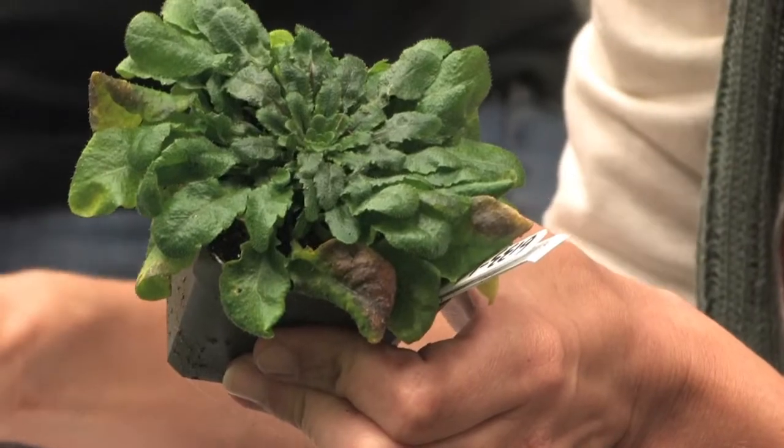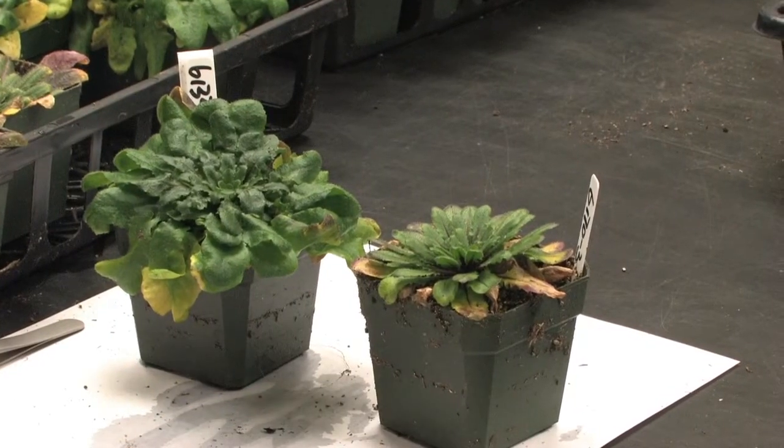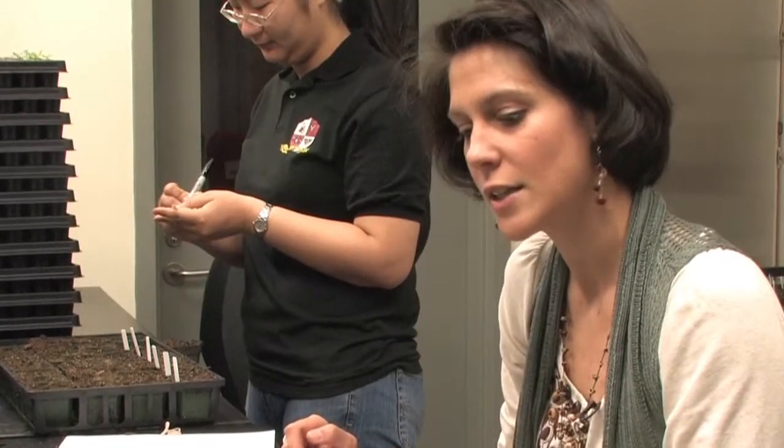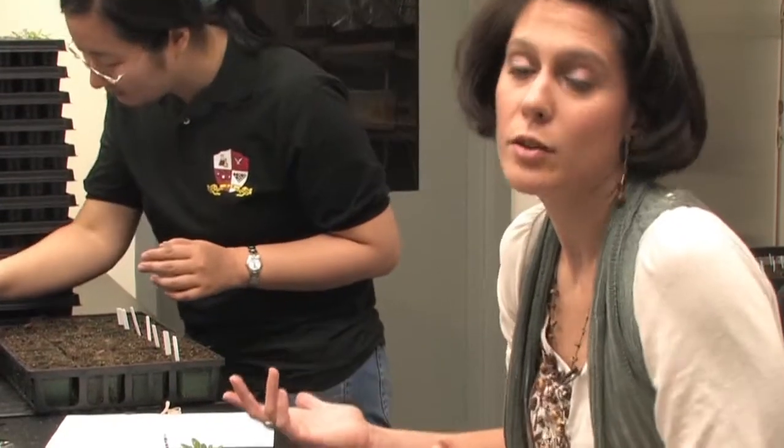It tells us that there is a lot of diversity in the collection we're working on. And diversity can mean what we call phenotypic diversity, which is the diversity that translates into the shape of the plant, for example, the morphology of the plant, its physical appearance.